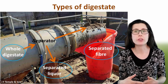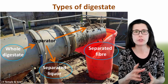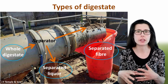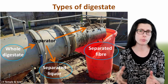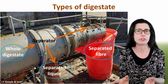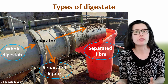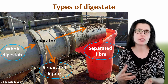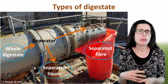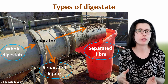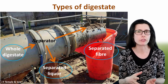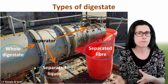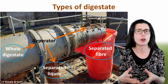Now on to the three main types of digestate, which are circled in blue on the photo. In some anaerobic digestion plants, the digestate that is produced is left as it is — not put through any post-digestion steps. This is called whole digestate, and it is generally a dark liquid with 3 to 10 percent dry matter. In some AD sites, the whole digestate is separated into two fractions: separated liquor, which is the liquid fraction, and separated fibre, which is a solid fibrous fraction.